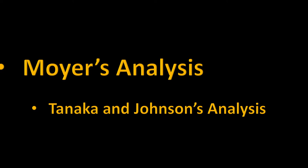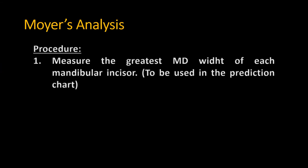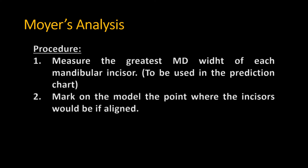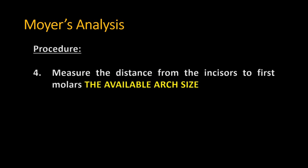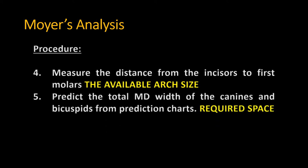Let's see how to perform Moyer's analysis in detail. First, measure the greatest mesiodistal width of each mandibular incisor. Then, mark on the model the point where the incisors would be if aligned, and mark the point on the mesial surface of the first permanent molar. The available space is measured between the incisor alignment point and the first molar's mesial side. Use the lower incisors' mesiodistal width sum to predict the total mesiodistal width of the cuspids and bicuspids, which is also equivalent to the required space.